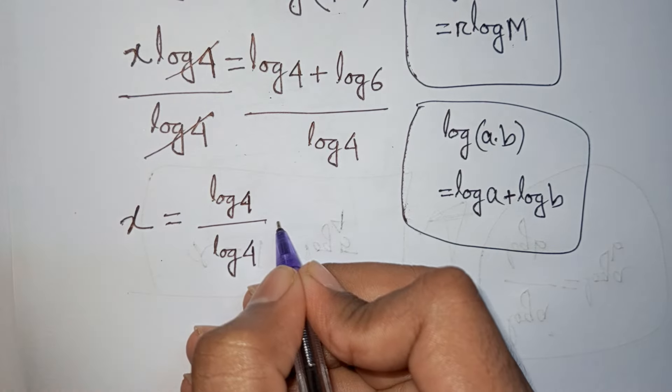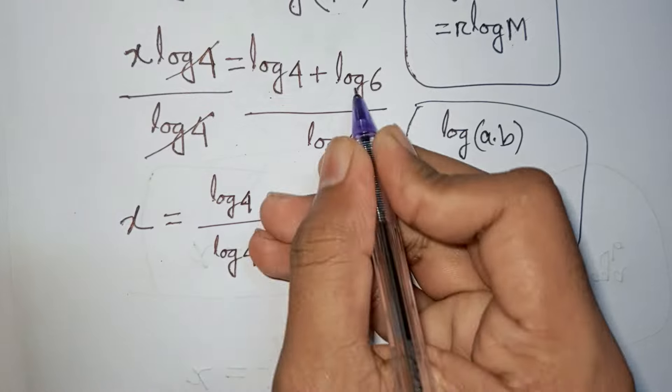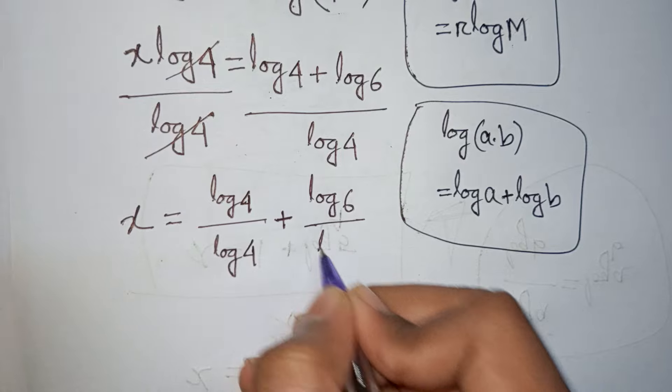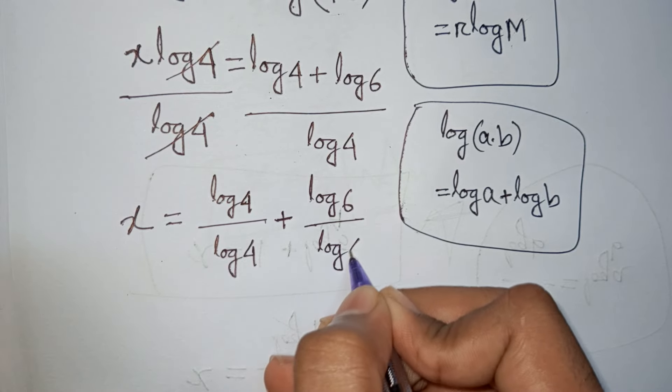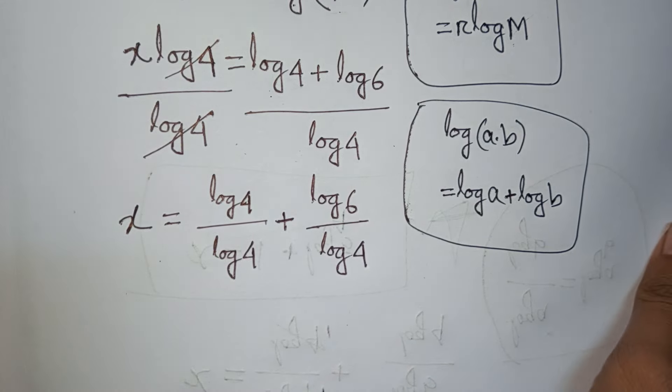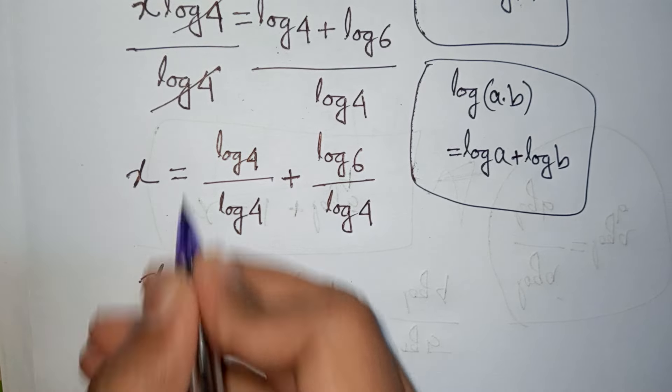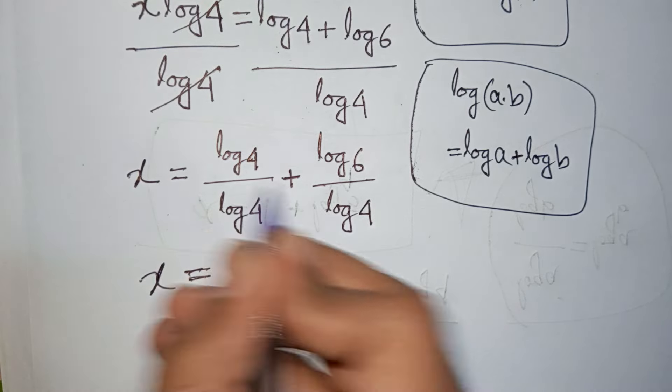Log 4 then plus log 6 over log 4. Now I can write here x is equal to log 4 divided by log 4, that means 1.